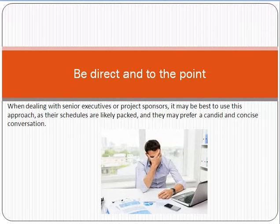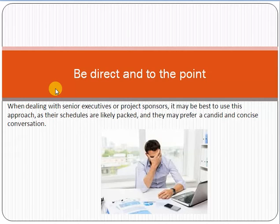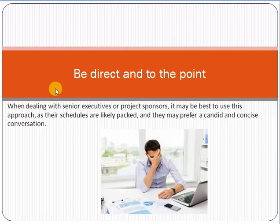Whenever you are giving bad news, first of all be direct and to the point. Senior management doesn't have much time — they are already packed with hundreds of things. Whenever you are giving any bad news, don't try to go around the topic. Just be specific and honest — tell the truth, whatever the facts are. Never try to go around things. Many people think they can do that in front of management, but honestly, 90% of people fail with that strategy. Always be direct, on the point, and tell the truth.